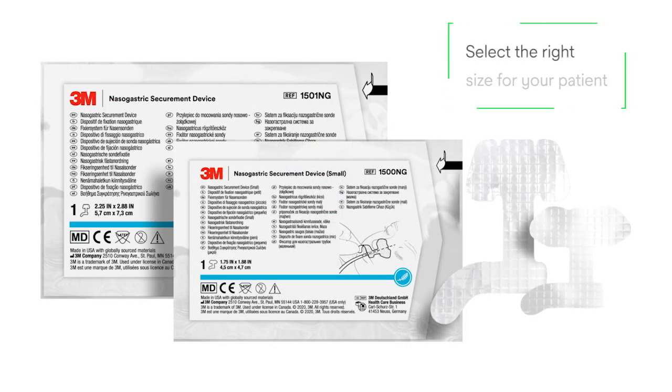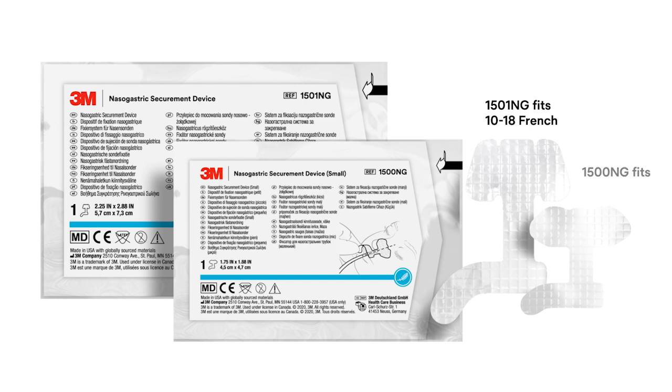To begin, select the correct size device for your patient. Per the instructions for use, the large device, 1501NG, is designed to fit NG tubes 10-18 French, while the small device, 1500NG, fits NG tubes 8-12 French. Generally, the large device is suitable for adults.